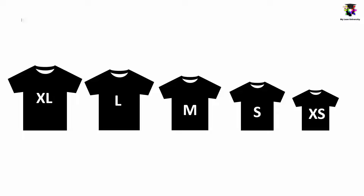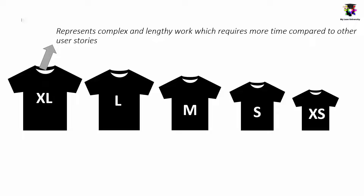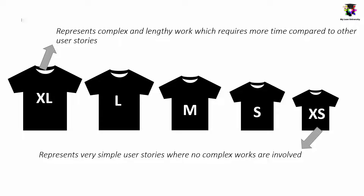So what do these sizes mean? Let us see the two outlier sizes. XL or extra large represents complex and lengthy work which requires more time compared to the other user stories. XS represents very simple user stories where no complex work is involved.